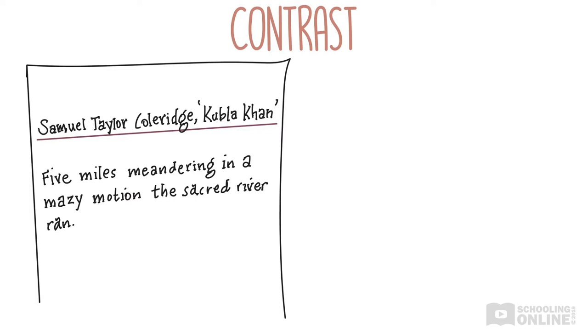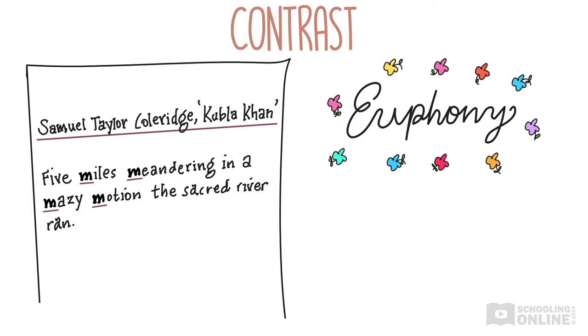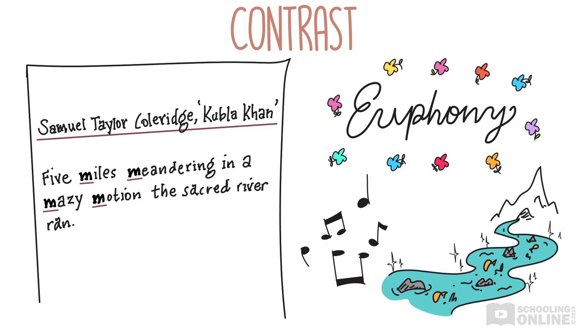Let's contrast two lines from the poem Kubla Khan by Samuel Taylor Coleridge. Here's the first: 'Five miles meandering in a mazy motion the sacred river ran.' This is a great example of euphony. The alliteration repeating the M sound makes the description seem lyrical or song-like. The euphony thus adds to the beauty of the river.